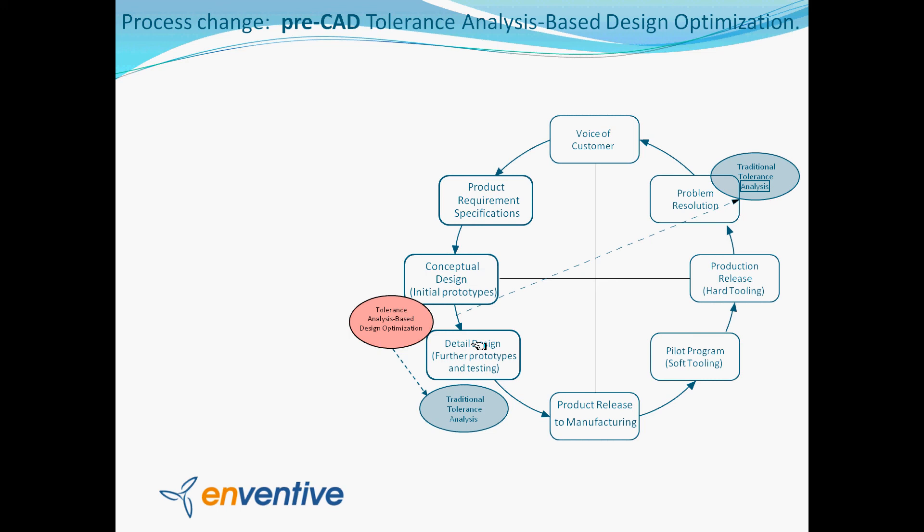But the main usage of Enventive is really in the preliminary design phase — that's where it brings the biggest value. Because when it is used in this phase, it allows you to make the right choices on all nominal and tolerance values. This allows you to reduce tooling changes due to bad early decisions, reduce the number of engineering changes, unnecessary prototyping efforts, and efforts spent trying to solve production problems.